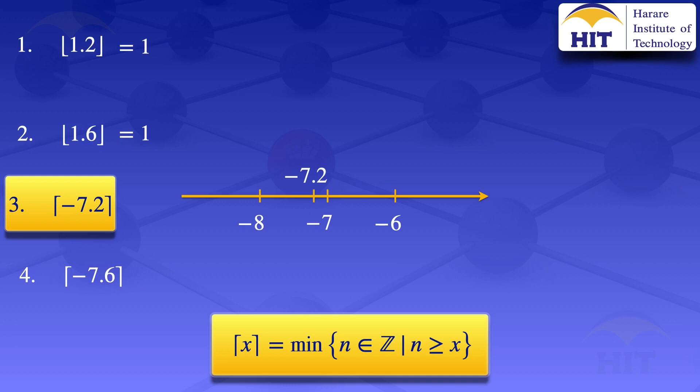We are looking at integers that are not less than minus 7.2 — those are integers to the right of minus 7.2: minus 7, minus 6, minus 5, and so on. For the ceiling value, we look at the smallest of those integers. The smallest of minus 7, minus 6, minus 5 is minus 7. So the ceiling value of minus 7.2 is minus 7.